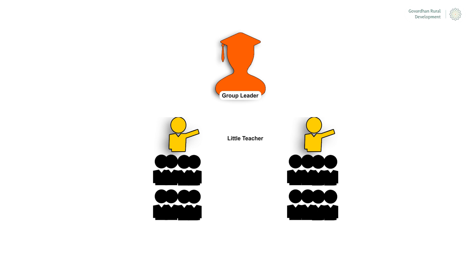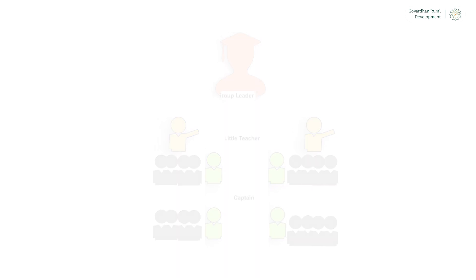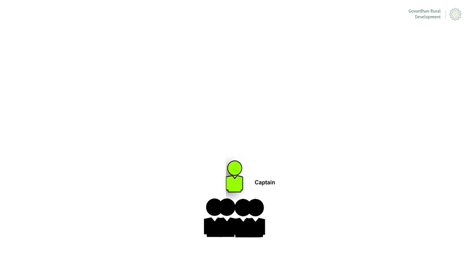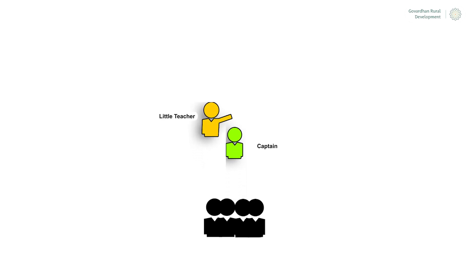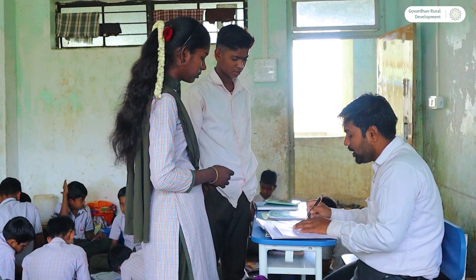We further divide the two groups into four smaller groups and identify a captain for each group. Students practice mathematics within their group. If a student doesn't know how to solve a problem, they ask their captain. If the captain can't answer, they ask the group leader. If the group leader can't answer, the question goes to the teacher.